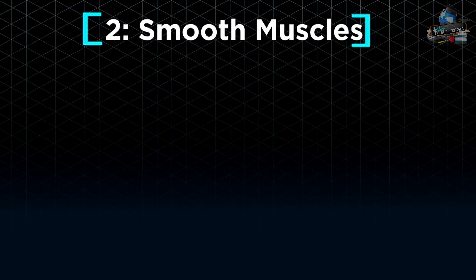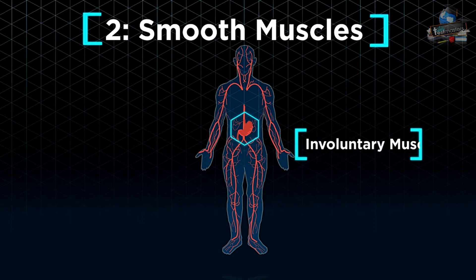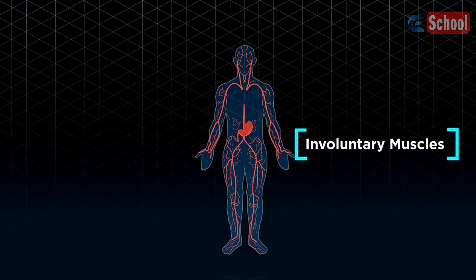Smooth muscles, which make up your blood vessels, stomach lining and other organ linings, are involuntary muscles as their movement is not under our control. For example, it is impossible for us to tell our stomach to churn and digest our food faster.